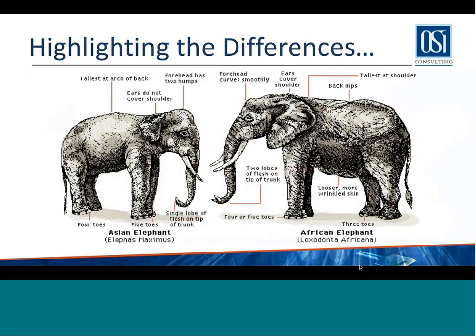Expounding on the elephant theme — we want to highlight the differences. Tell you what things are in VCP that are different in the cloud. We don't want to talk about the application as a whole; things that are the same in both, we won't even discuss. For example, we won't tell you that all elephants have four legs and a trunk and a tail, but we'll talk about how the foreheads are different or how the ears are larger in one.